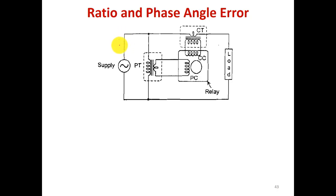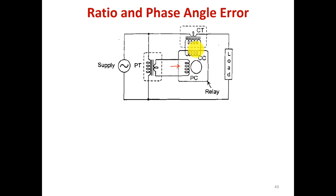In this figure you can see a typical example where one relay is connected and the CT and PT are feeding the signal to the relay. The relay has a current coil and a potential coil. The potential coil is fed by the potential transformer and the current coil is fed by the current transformer, with the load connected here. The relay will detect if some fault happens.